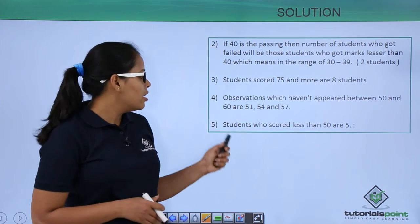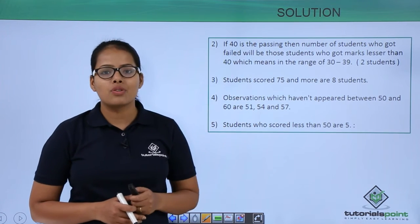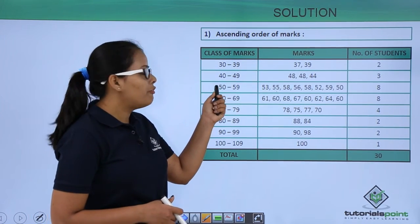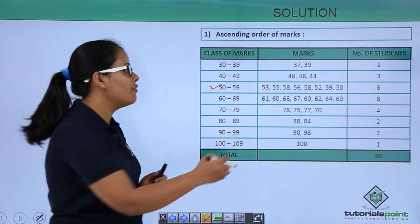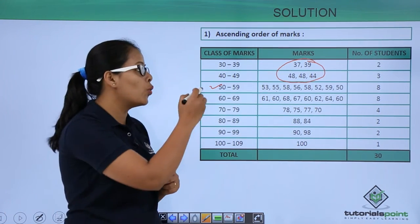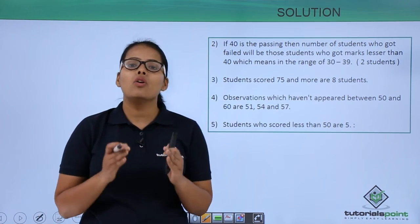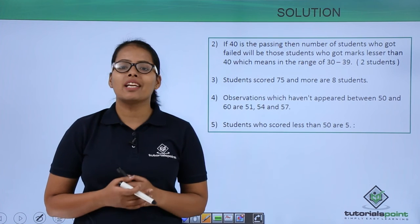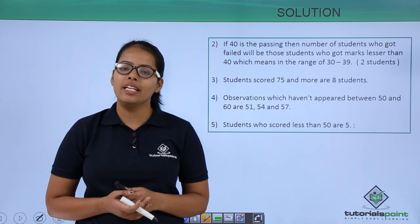The fifth problem asks how many students scored marks less than 50. Students in all intervals below 50 — there are exactly five students who scored less than 50. I hope there are no doubts; I have answered all these problems one by one using very easy steps. I will be covering more problems in coming video lectures so you can understand statistics in detail. Thank you.